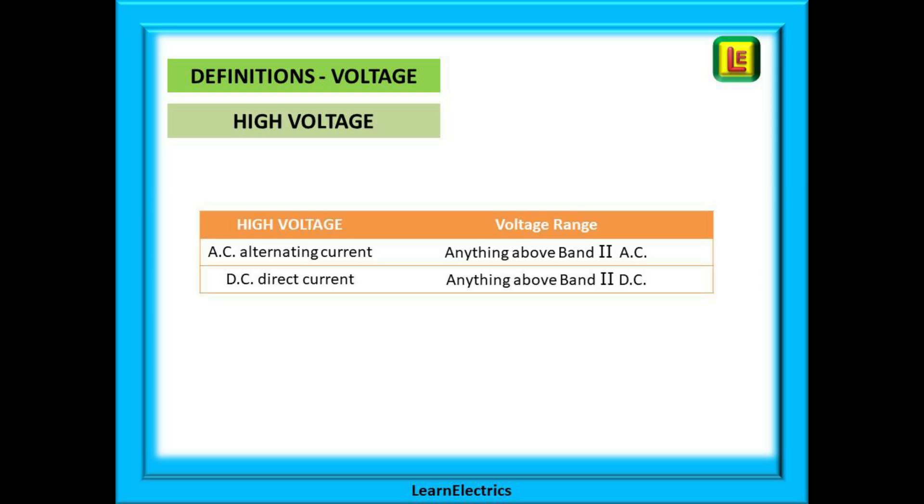Now we have high voltage. Anything above the low voltage limits for AC and DC are called high voltages and there is no band number for high voltage.